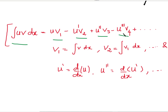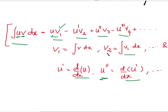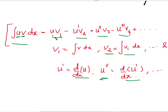In Bernoulli's formula, starting from the first term, write u and keep differentiating: u' is the differential of u, u'' is the differential of u', and so on. For the second function v, v₁ is the integral of v, then keep integrating: v₂ is the integral of v₁, and so on. In each term, write the current derivative of the first function multiplied by the current integral of the second function.